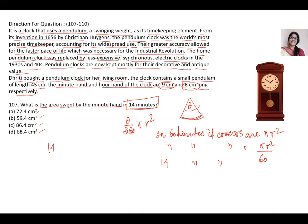So the answer will be 14 upon 60 multiplied by pi and what is r here? r is 9, 9 square.